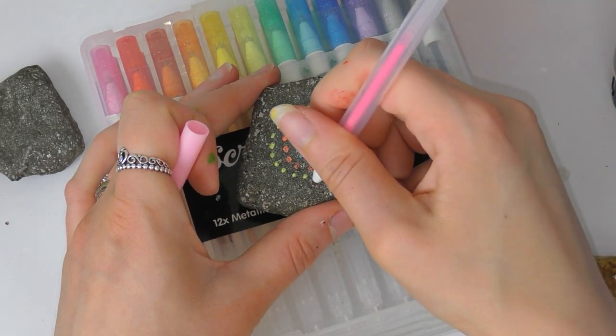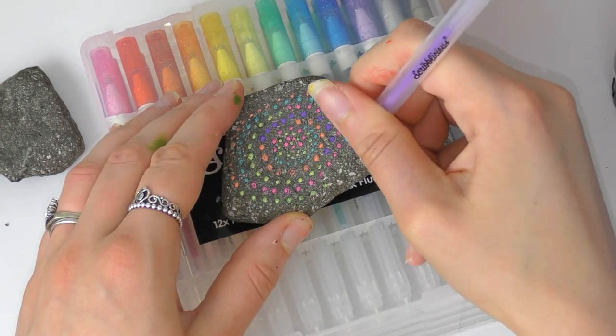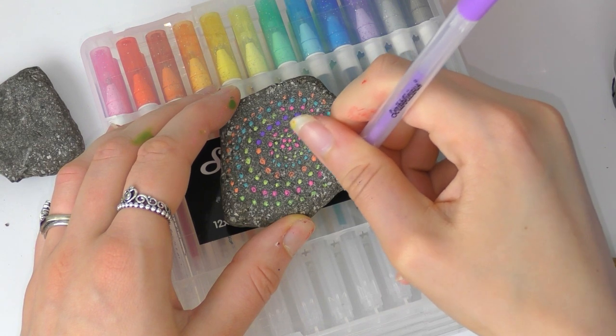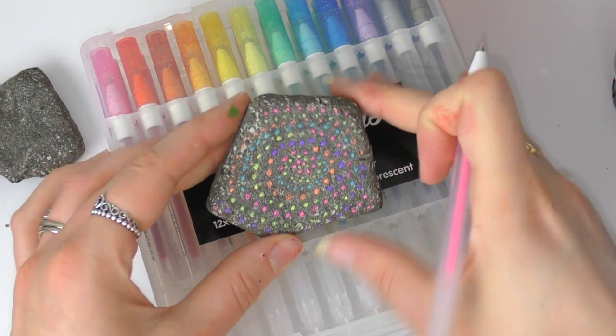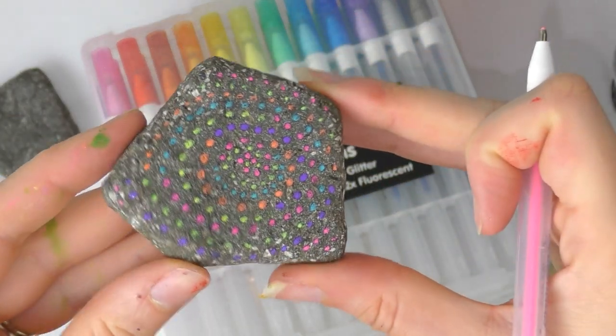As you can see I'm just building up the spiral shape, changing my pen every few dots and we are very nearly finished now. This is how it's looking. I really like the pastel shades, I think it blends into the rock very nicely and here is the finished design.